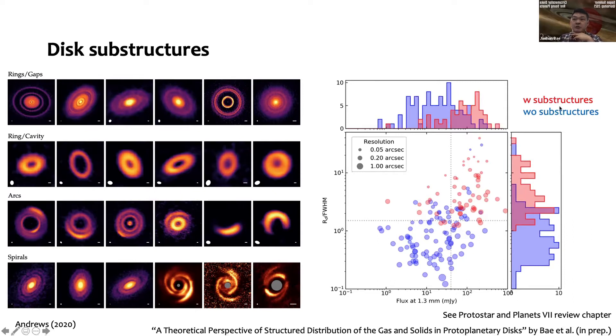What this shows is that we see more structures in brighter and larger disks, which is the upper right corner of this diagram. The red dots are disks with substructures; blue dots are without substructures. Smaller and less bright disks don't have as good data as these bright disks. They're oftentimes observed with a pretty big beam and only integrated over a few minutes from surveys.